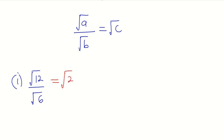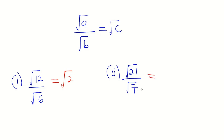The next example: square root of 21 divided by square root of 7. Without doing a lot, we can see that 21 is divisible by 7, since 7 times 3 gives us 21. And since they are in radical form, the answer is going to be square root of 3.